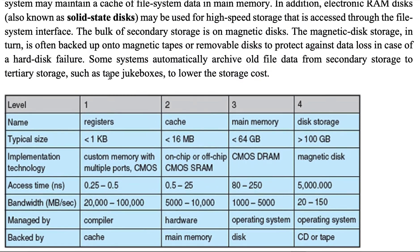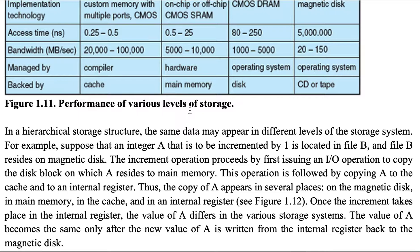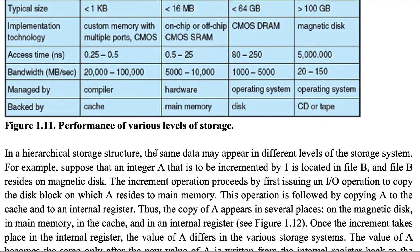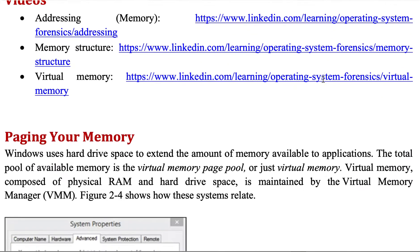When we talk about caching: main memory helps disk storage, cache helps main memory, and registers help cache. Each level helps the other to increase performance. For example, the migration of integers from disk to register illustrates how data moves up through the storage hierarchy.